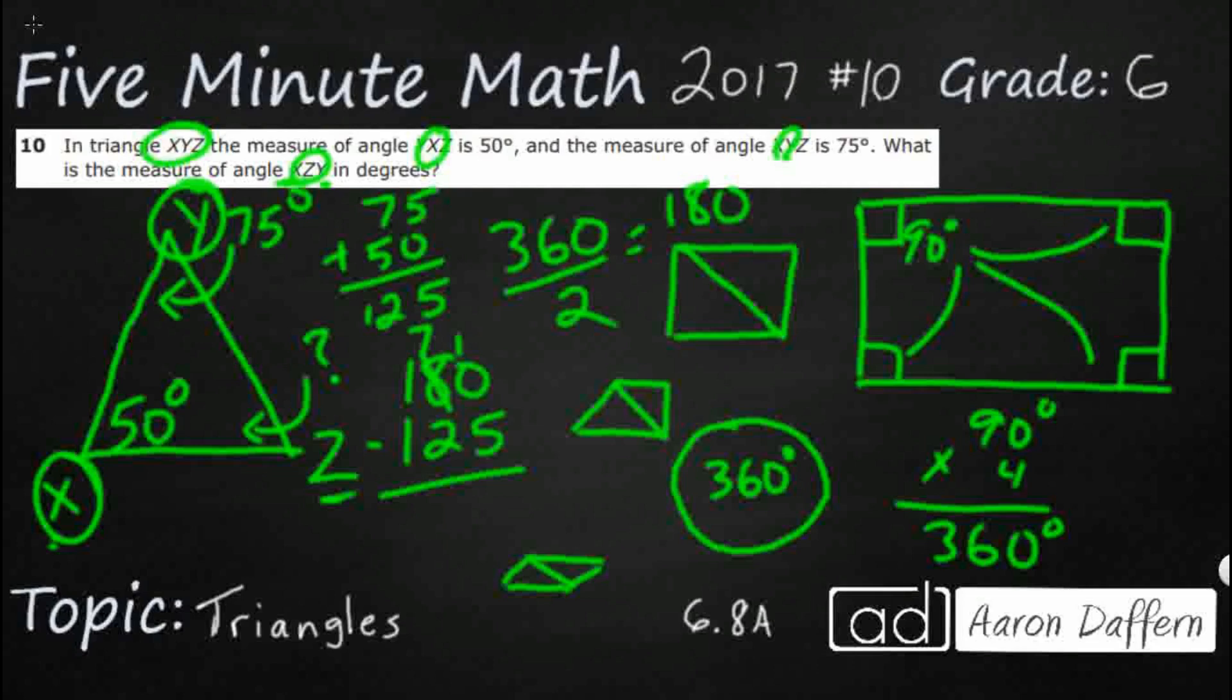Then we've got basic subtraction. And there we go. We've got 55 degrees. Now if we want to double check, we can just add up 55 and we can add up 75 and 50. We can make sure it makes 180. So that's 10 and that's 10. That's 18. So there we go. So our answer is 55 degrees.